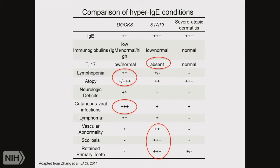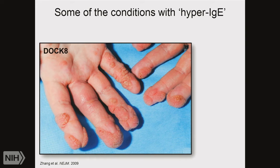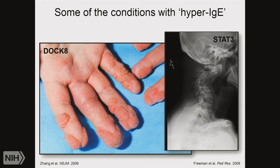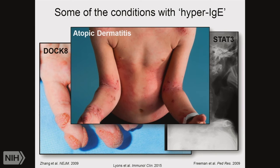Getting back to our patient — he was born from a consanguineous union, suggesting a recessive disorder. His early childhood was really uncomplicated: the pregnancy was uncomplicated, no infections in utero, no complications at birth. Early childhood had no illnesses, but shortly after two years of life he started developing recurrent skin and lung infections. This 12-year-old had IgE 300 times the upper limit of normal — about 30,000 international units per milliliter — moderate to severe atopic dermatitis, food allergies to multiple foods, asthma, allergic rhinitis, recurrent skin abscesses, recurrent pneumonias, and chronic draining otitis externa.